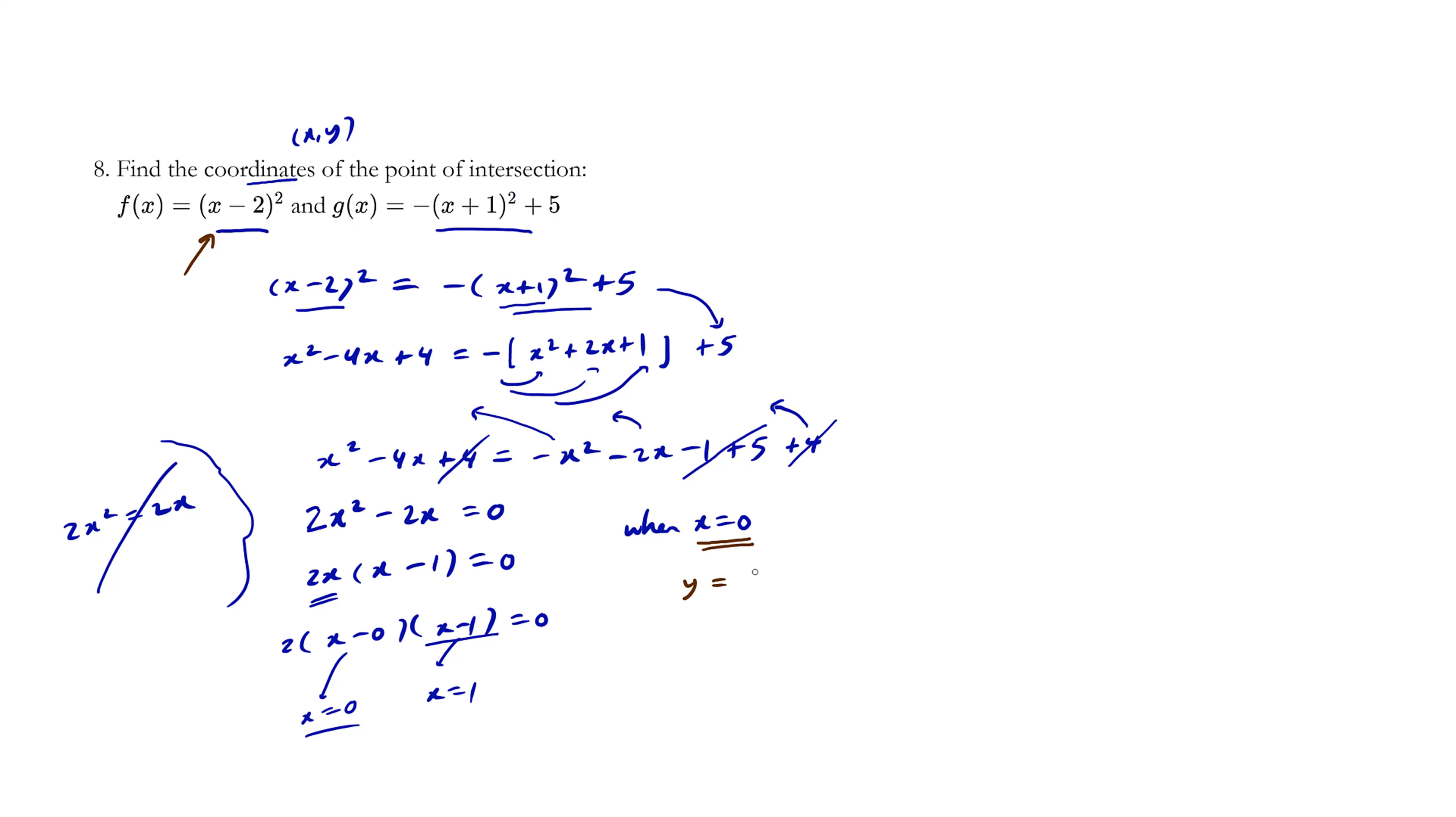Let's just plug it into f of x every time. y, which is f of x, equals x minus 2 squared, which equals 0 minus 2 squared. So the y-value equals negative 2 all squared, which is 4. So we have the coordinates 0, 4. That's one.